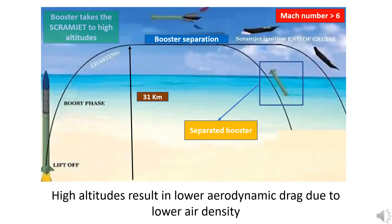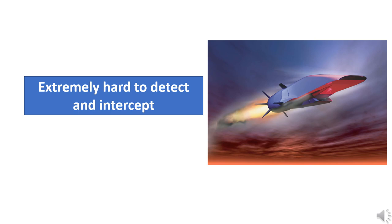Solid rocket boosters are used to take the scramjet to the required altitude and to hypersonic speeds. After that the booster separates and falls off, then the scramjet engine starts combustion and propels itself at hypersonic speeds. Because of these high speeds it is very hard to intercept these hypersonic missiles. It gives very less reaction time to the targets and makes the attack brutal and successful.